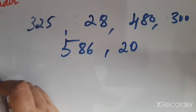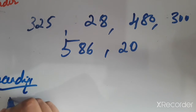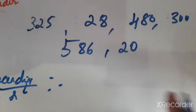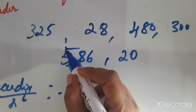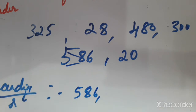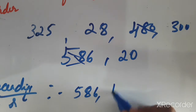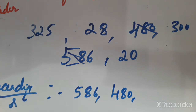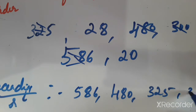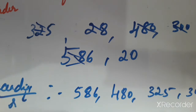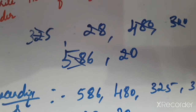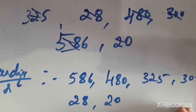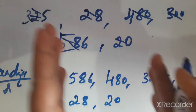Now write these numbers in descending order or decreasing order. Descending order means first the greater number, then smaller than that. Check which is the greater number: 580, 6 — cancel it. Then 480. Then 325. Then 300. Then 28. The last small number is 20. So ascending order means smaller to greater, and descending order means greater number to smaller numbers.